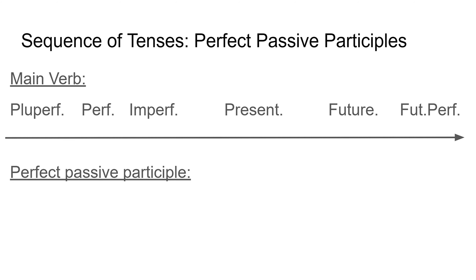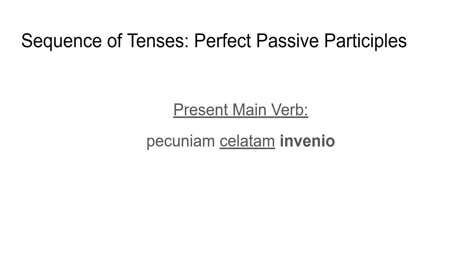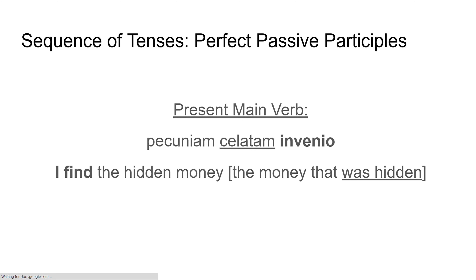If my main verb is one of my past tenses — pluperfect, perfect, or imperfect — I have to take another step back in time, because my participle has already happened by the time the main verb happens. So I translate my participle as a pluperfect: 'had been'. If my main verb is present, I have to take a step back and translate it as imperfect: 'was'. For example, with present invenio meaning 'I find', the perfect passive participle has to have already happened before I find the money — so 'I find the hidden money', or literally 'I find the money that was hidden'. I've taken a step back from my present main verb into the imperfect tense.